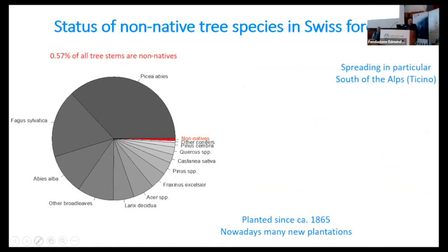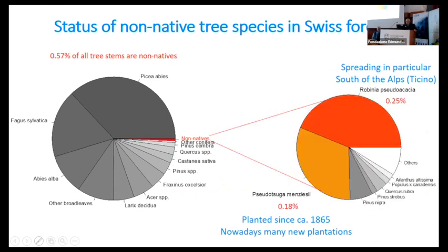What is the situation in Switzerland for non-native tree species? The share of the whole forest is less than 1%. About 0.25% is covered by Robinia — black locust — and about 0.2% is Douglas fir.